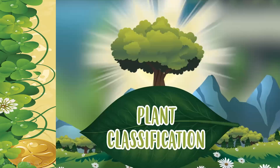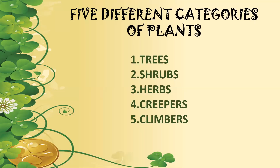Now we'll come to plant classification — into how many categories the plant kingdom can be classified. There are five different categories of plants. First is trees, second is shrubs, third is herbs, fourth is creepers, and fifth is climbers.